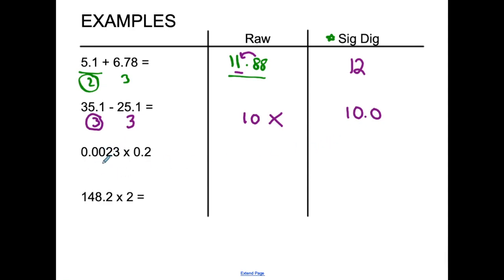How about this one? Two significant digits here, one significant digit here. Remember, these are all leading zeros. So they are considered insignificant, even though they're important, but to the question of how many sig digs, they're not. So one sig dig is the lowest number of sig digs in the question. So my answer should be in one significant digit.